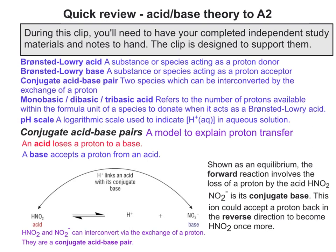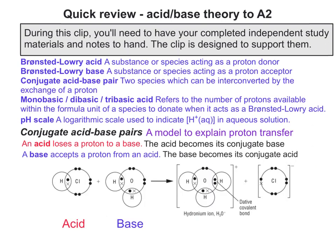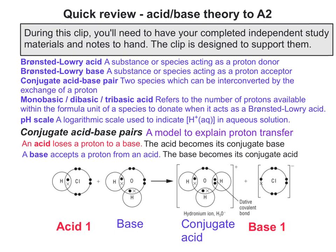Considering the reaction between hydrochloric acid and water, using dot-cross diagrams we form something called a hydronium ion. We can see that water behaves as a base. Using colour coding, you can easily see the pairings — there's pair 1 and pair 2, which can be interconnected.